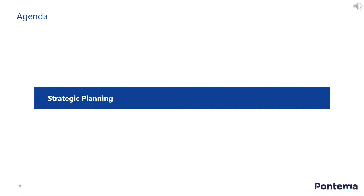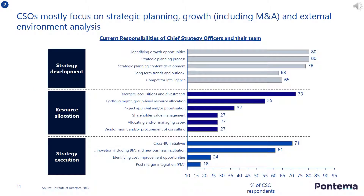In this second section of the lesson, I will address the topic of strategic planning. In a recent study, chief strategic officers were asked what the current responsibilities of their team were. The chart shows the overall results, indicating that CSOs and their teams were mostly focused on strategic planning, growth including mergers and acquisitions, and external environment analysis. The least priority responsibilities included vendor management, post-merger integration, and identifying cost-improvement opportunities. The responsibilities are still largely revenue-focused.